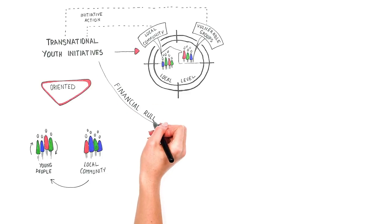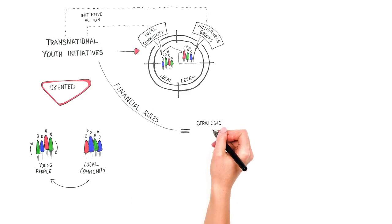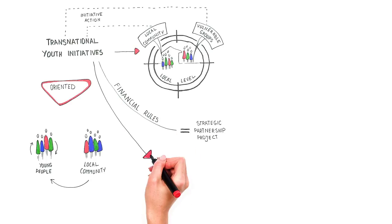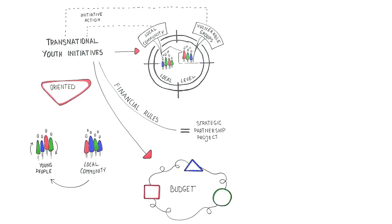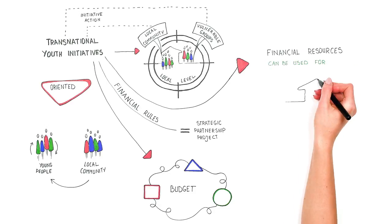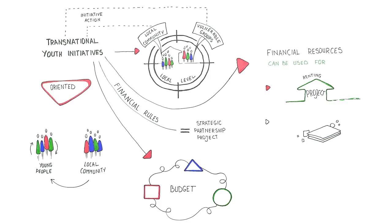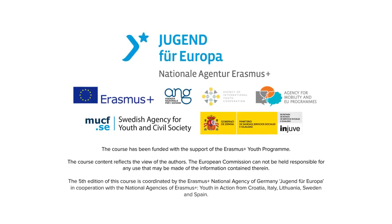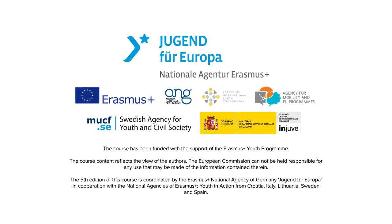Financial rules for transnational youth initiatives are the same as for strategic partnerships. The budget itself is divided into several categories depending on what the given amounts will be needed for, while at the same time it is quite flexible. The financial resources can be used by project organizers to pay for renting the premises where you will prepare or implement your project, materials, promotion and visibility of the project, or meetings of the implementation team.